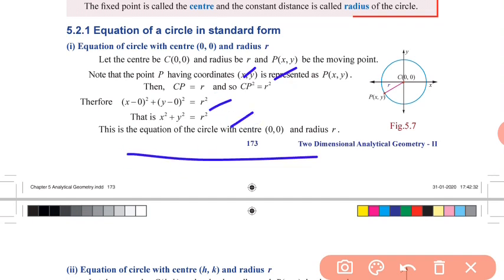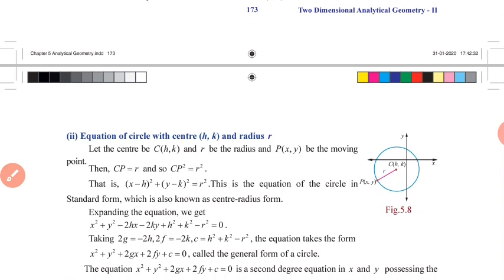Now, the equation of the circle with center (0,0) and radius R is: x squared plus y squared equals R squared.